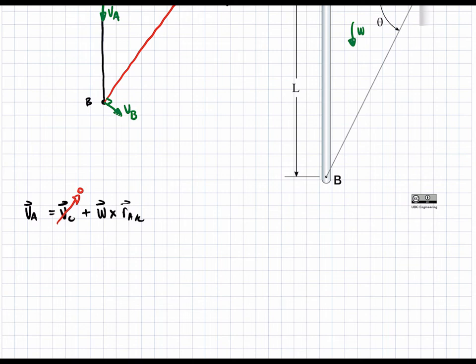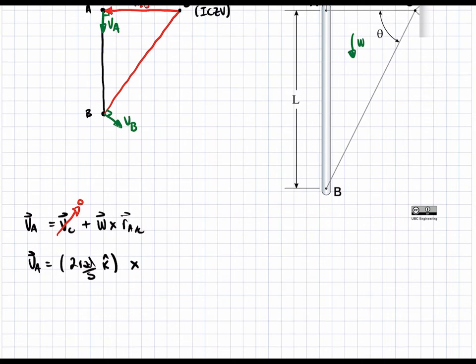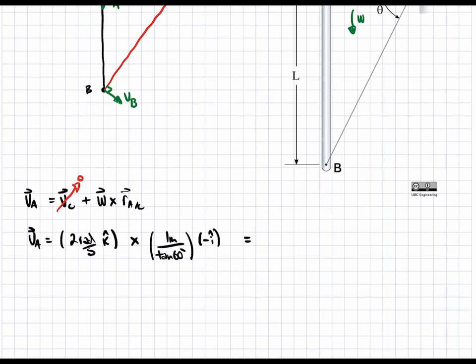Based on the geometry, we know omega, so we can find VA. VA is equal to omega, which is two radians per second in the k hat direction. Notice I put positive k hat. This is crossed to this radius which is very simple, it's just along the negative x direction. The length is going to be proportional to the angle. So it's one meter over tan of theta, which is 60 degrees. And again, this is going to be in the negative i hat direction, because it points to the left.